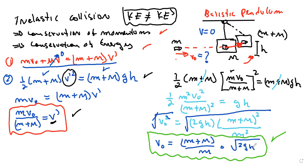As you can see, this is an inelastic collision where kinetic energy is not conserved, and all the kinetic energy has been converted into potential energy. There you go — that's the ballistic pendulum problem. Thank you.